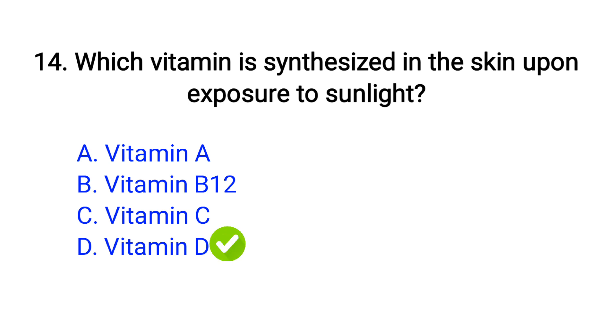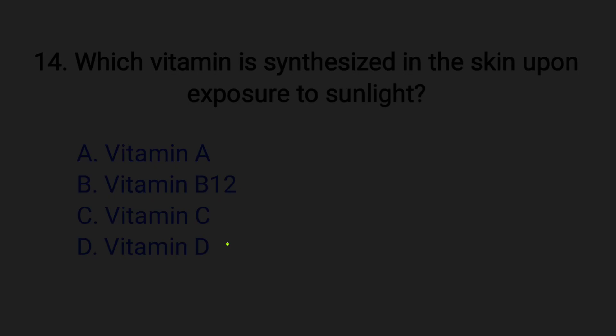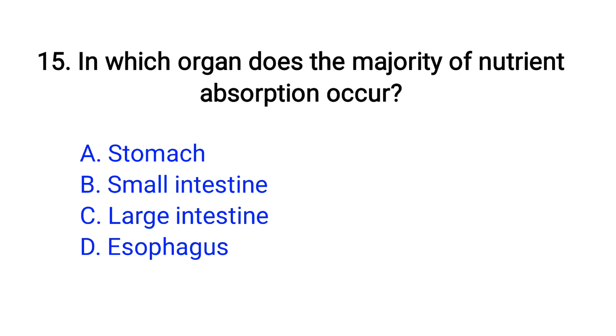Question number 15. In which organ does the majority of nutrient absorption occur? Option A: Stomach, B: Small intestine, C: Large intestine, D: Esophagus. The right answer is option B, Small intestine.